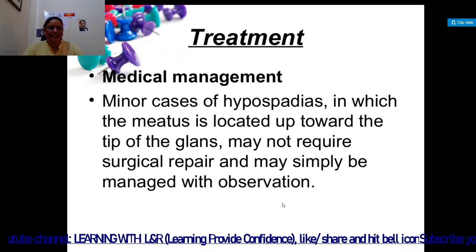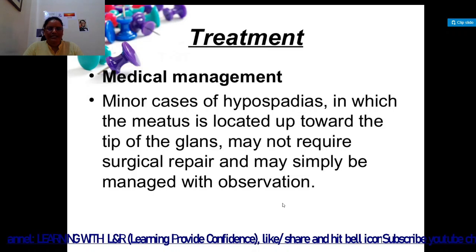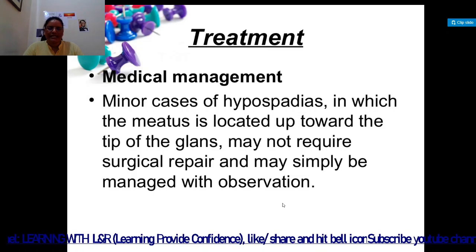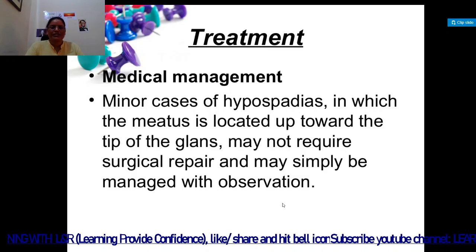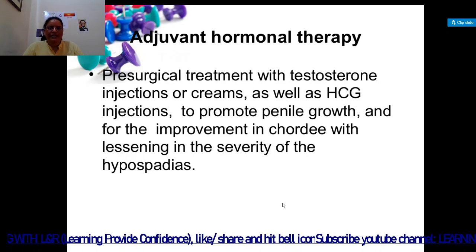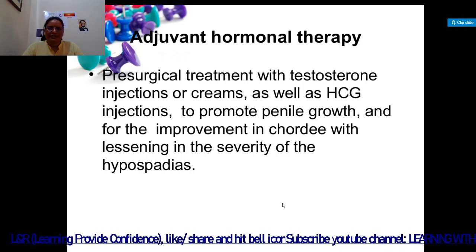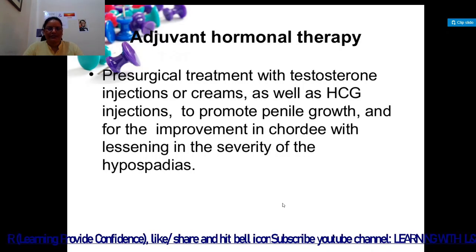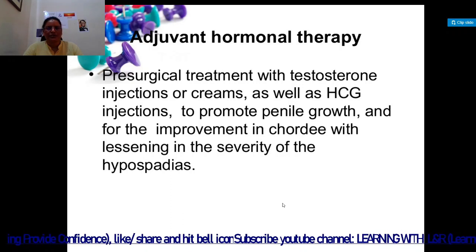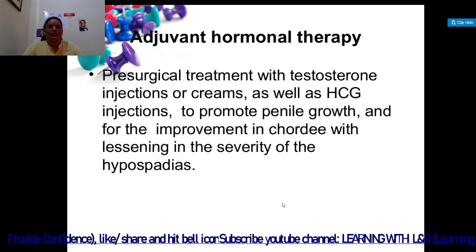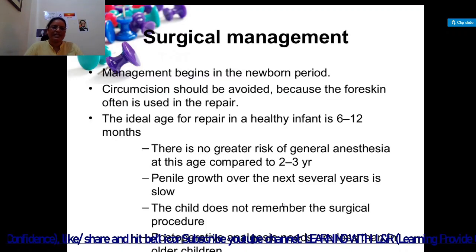In medical management, minor cases in which the meatus is located toward the tip of the glans may not require surgical repair and may simply be managed with observation. Adjuvant hormonal therapy includes pre-surgical treatment with testosterone injection or cream, as well as HCG injection. HCG is a hormone that helps promote penile growth and improvement in chordee with lessening in the severity of hypospadias.